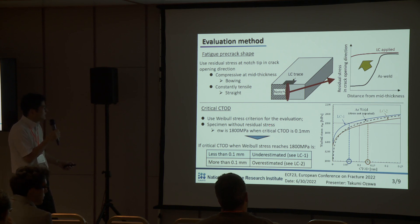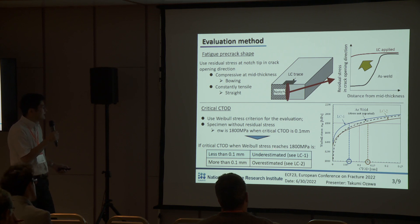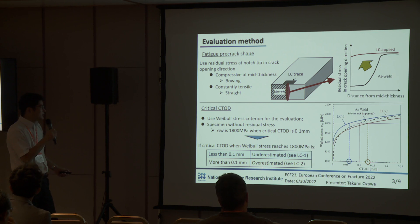For critical CTOD, we use the viable stress criterion for evaluation. In a specimen with no residual stress, the viable stress value is 1,800 MPa when critical CTOD reaches 0.1 mm, as shown by the black line in the right figure. Therefore, if the viable stress reaches 1,800 MPa at less than 0.1 mm CTOD, like the blue line, we estimate that the critical CTOD was underestimated. If more than 0.1 mm, we estimate it was overestimated.